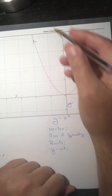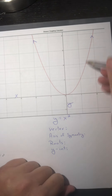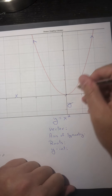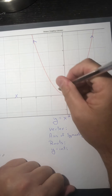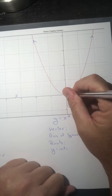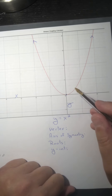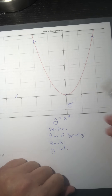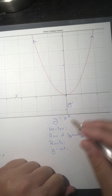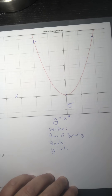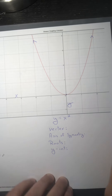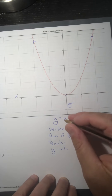The vertex is simply the very bottom of the graph in this case. Another way to look at it is that it's where the graph changes direction — it's going down to here and now it's going back up. Don't always look for it on the bottom, because sometimes these parabolas open downward — they're an upside-down U.